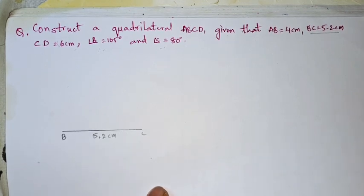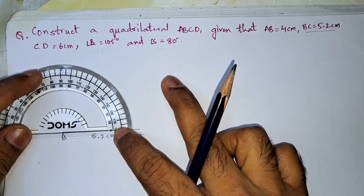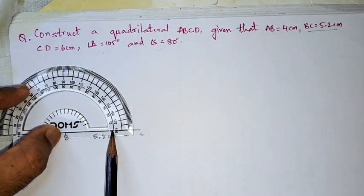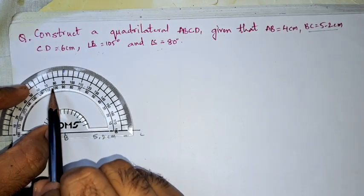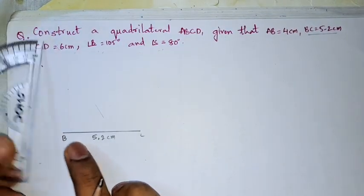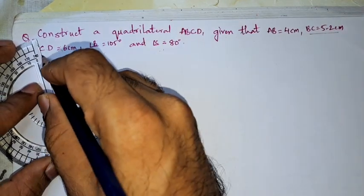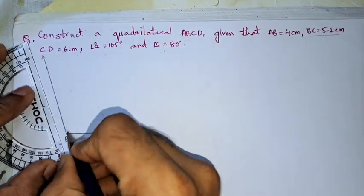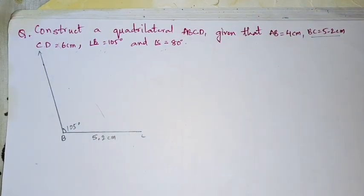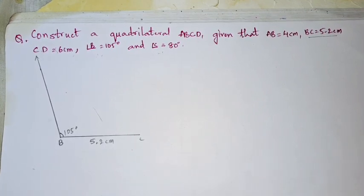Let us construct it by the protractor. 105, so here this is the beginning, zero. We got 100 here and this point will be 105. Let us draw a ray. So we got 105 degrees.